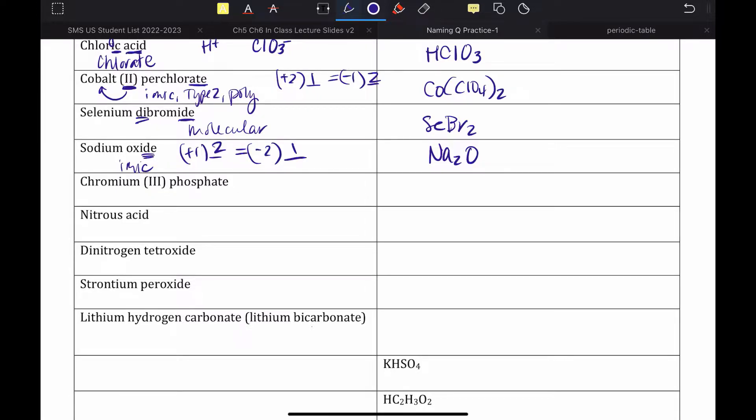Next up, we have chromium(III) phosphate. This, again, is the big clue that this is a type 2 ionic phosphate, tells me that it contains a poly. So, I just have to balance charge. I have plus 3, phosphate is minus 3, I need one of each. So, chromium phosphate.